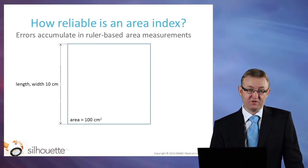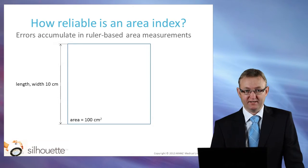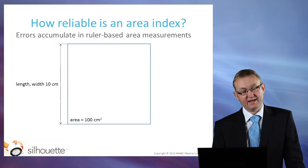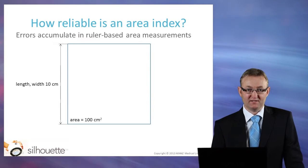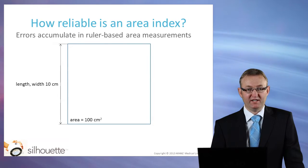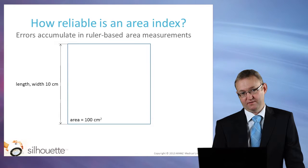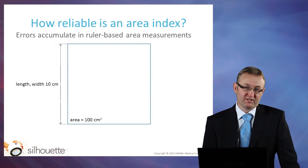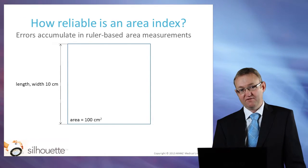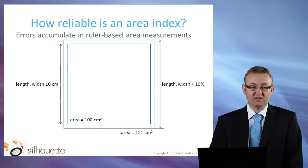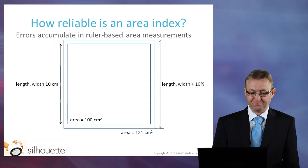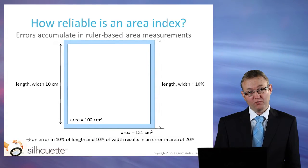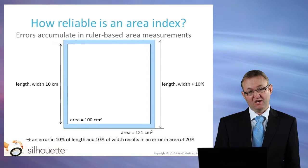The other problem with using length times width as an area index is that the errors accumulate. For example, I have a square whose sides are 10 centimetres, so the area is 10 by 10, or 100 square centimetres. Now, if we introduce 10% of error into the length and the width measurement, 10% of 10 is 1, so that equals 11. That would be a square of 11 centimetres by 11 centimetres, which has an area of 121 square centimetres — that is an error of 20%. As you can see, that small blue outline represents 20% of the area of the largest square.